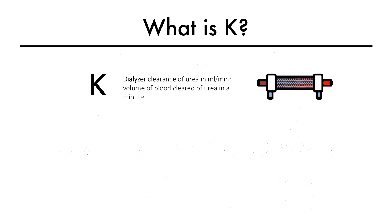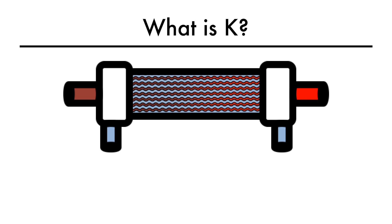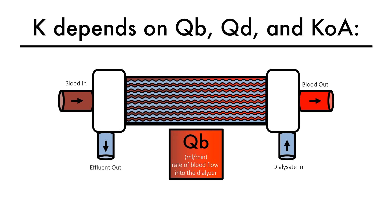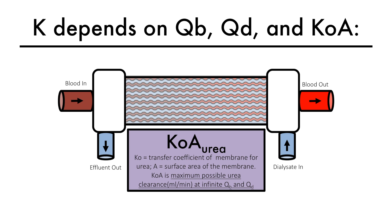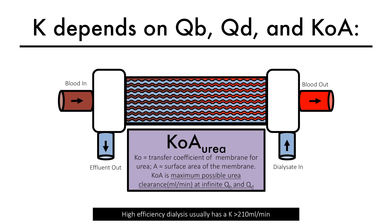Now, let's focus on K, which is the dialyzer clearance of urea — that is, how many milliliters of blood can be cleared of urea in one minute as blood flows through the dialyzer. It would make sense that K would depend on the blood flow into the dialyzer, the dialysate flow into the dialyzer, and the dialyzer membrane characteristics. In high-efficiency dialysis, K is typically more than 210 milliliters per minute.